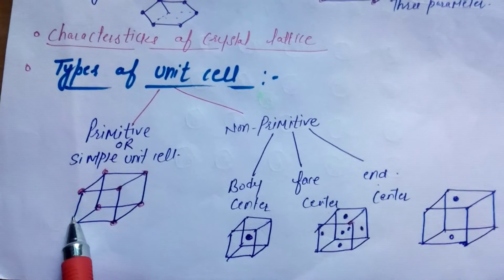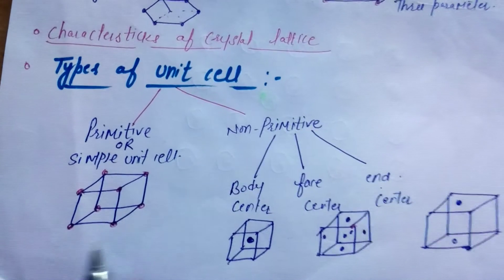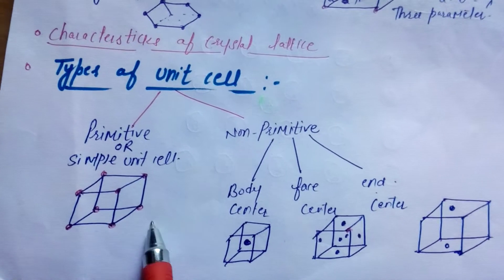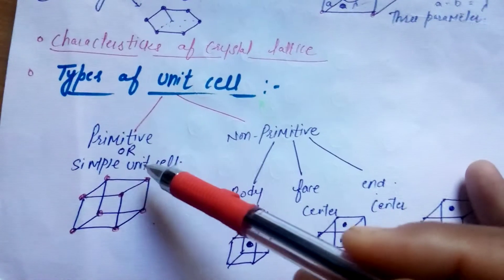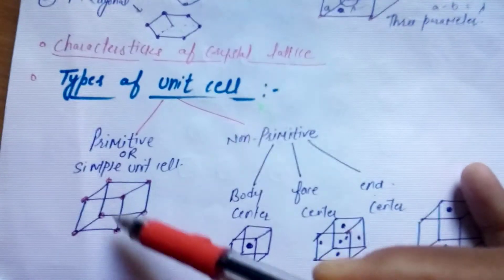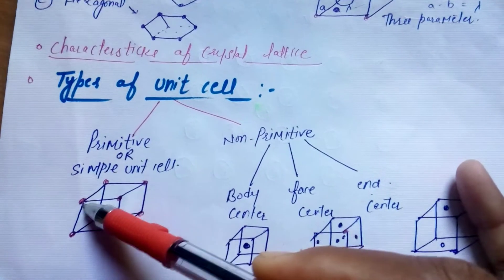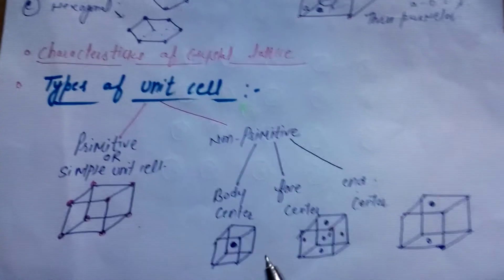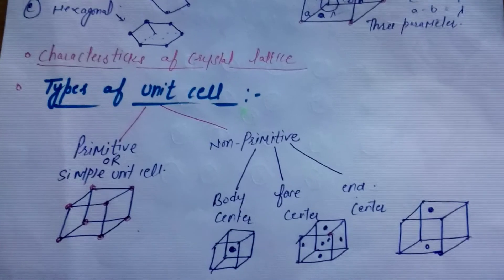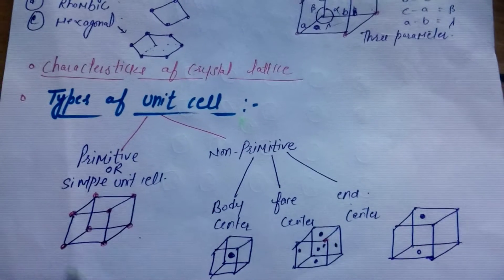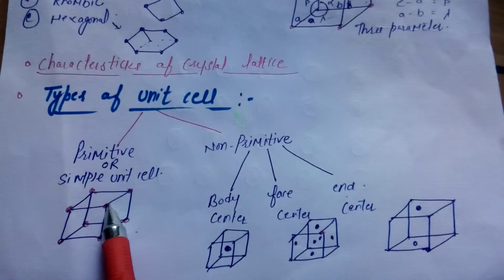In the primitive or simple unit cell, there is an atom or molecule at each corner. How many corners are there? There are eight corners — 1, 2, 3, 4, 5, 6, 7, and 8. These eight atom molecules are arranged at each and every corner. In each corner of this unit cell, you will have an atom molecule arranged.